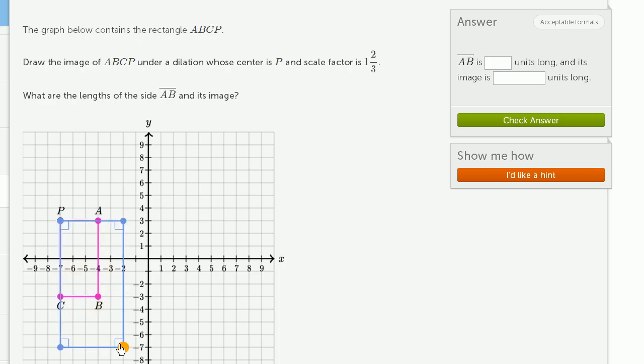And notice, point B is now 1 and 2/3 times as far in the horizontal direction. It was 3 away in the horizontal direction, now it is 5 away from P's x-coordinate. And in the vertical direction, in the y direction, it was 6 below P's y-coordinate. Now it is 1 and 2/3 times as far. It is 10 below P's y-coordinate.